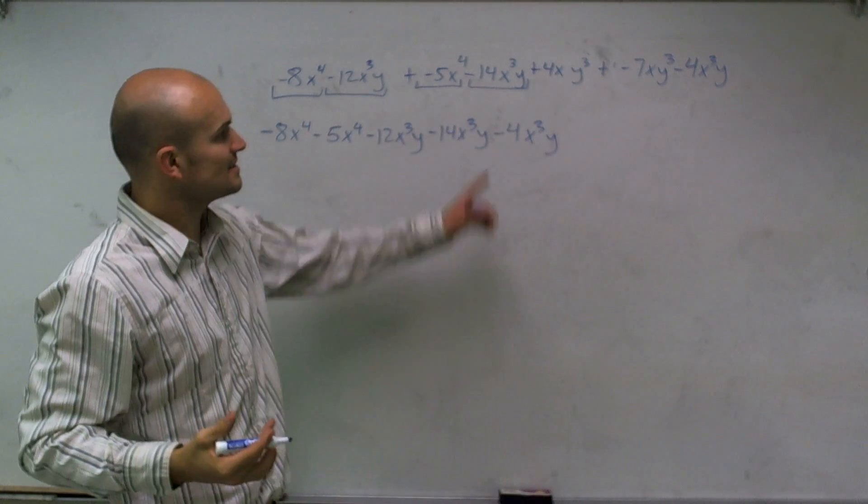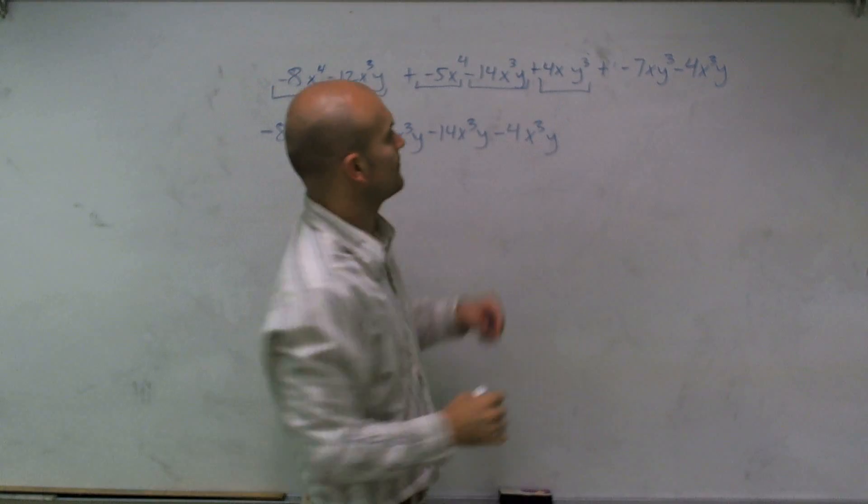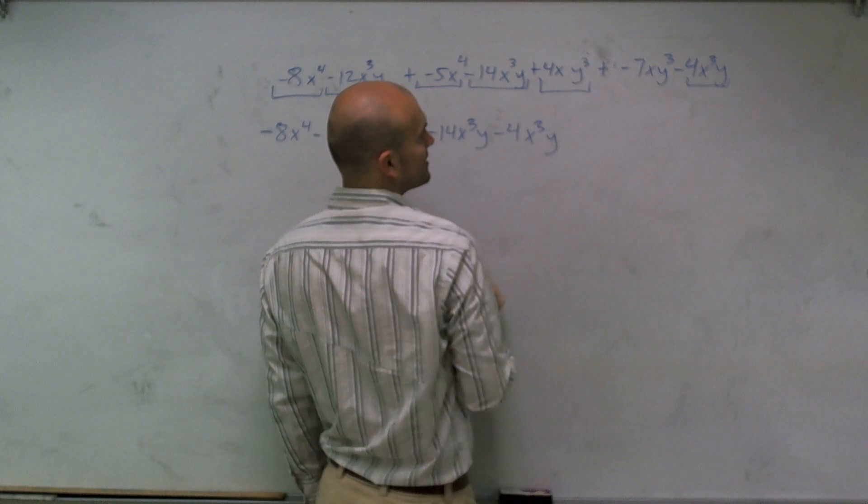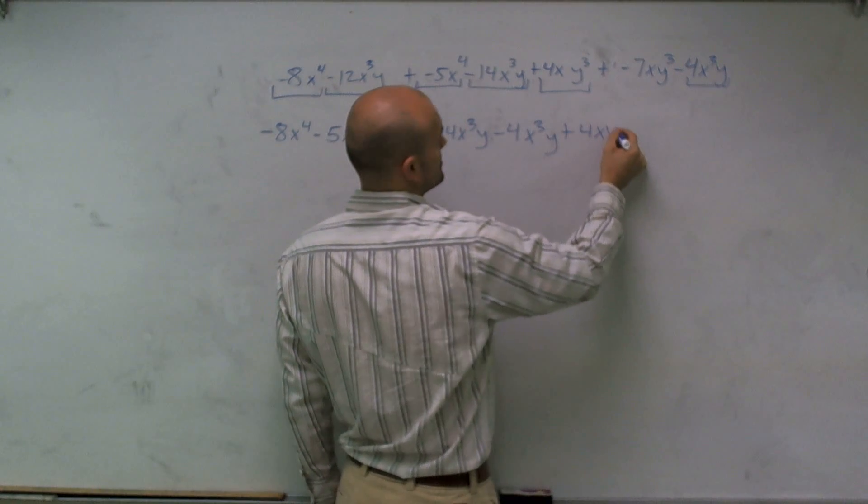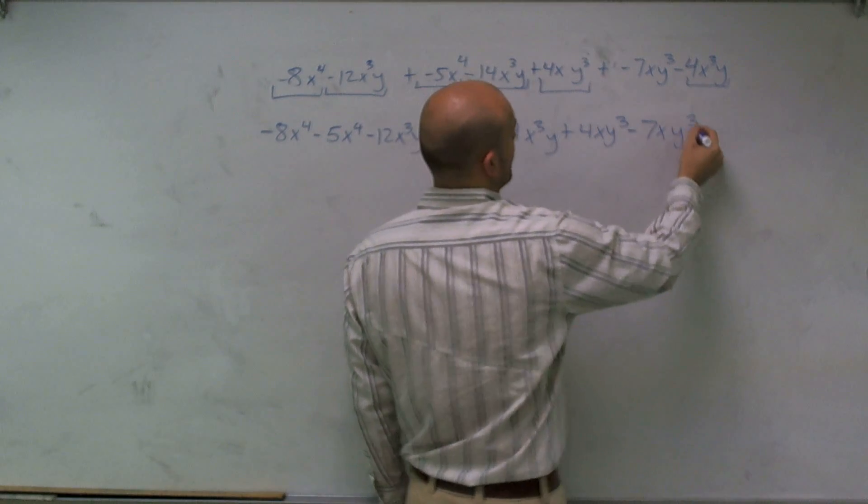And then now lastly, I look at this term and I see this has a 4xy cubed, and that was the other one. Well, I can only combine that with a negative 7xy cubed. So it's a positive 4xy cubed minus 7xy cubed.